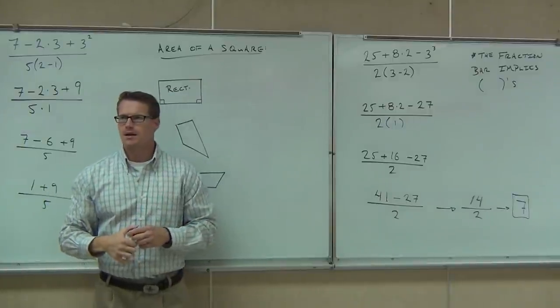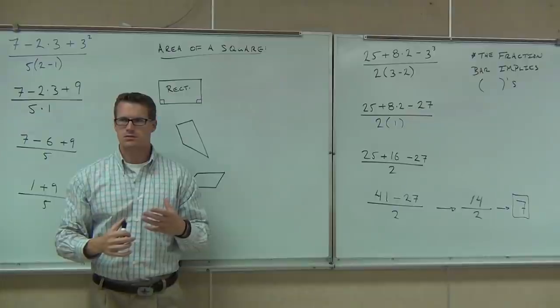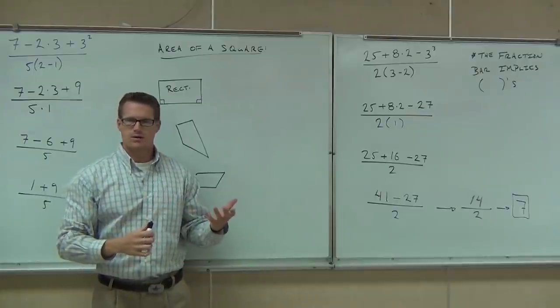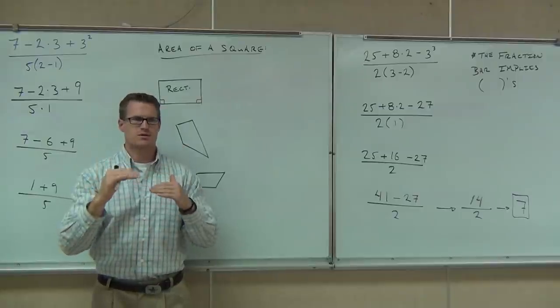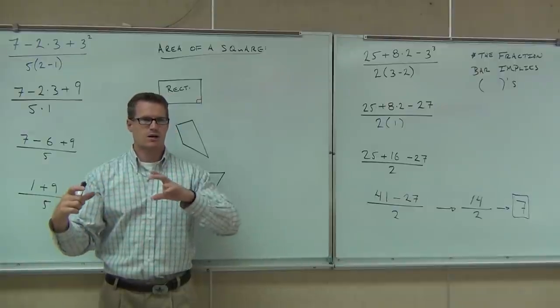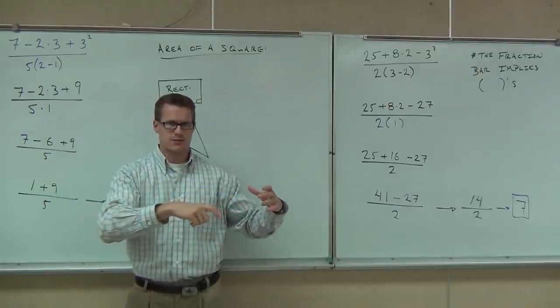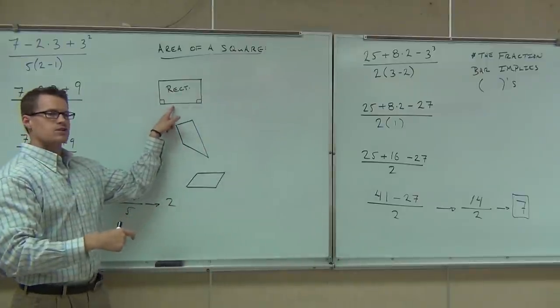Now, can you tell me how's a square different than a rectangle? All four sides are equal. Yeah, they are. Does it still have 90-degree angles? Yeah, it does. And it still has two pairs of parallel sides. So guess what? A square is a type of rectangle. Every square is a rectangle inherently. That's the definition of it. Not every rectangle is a square. Here's a rectangle that's not a square.